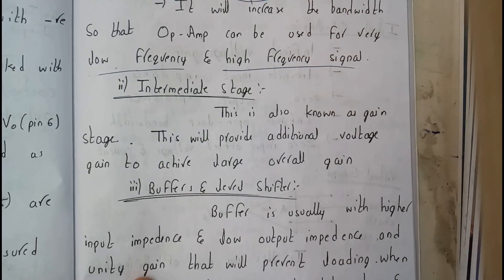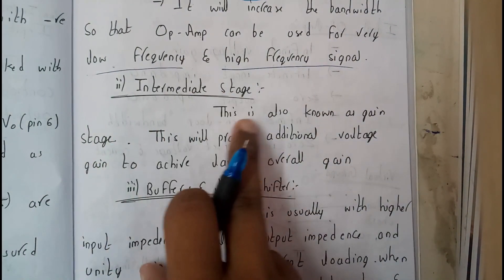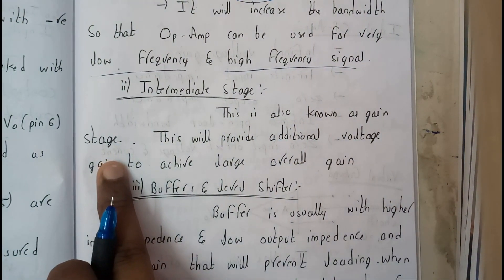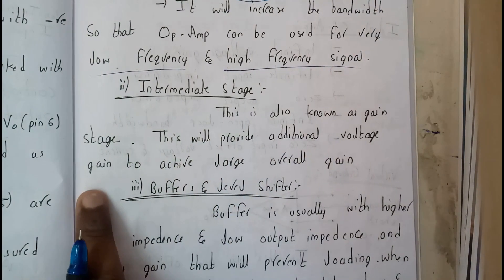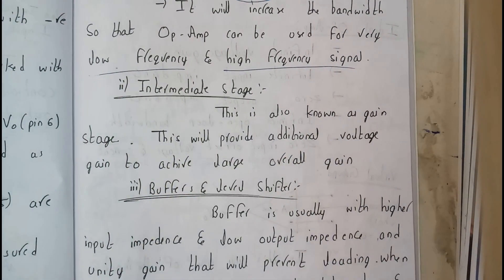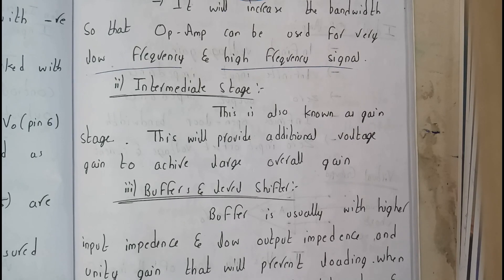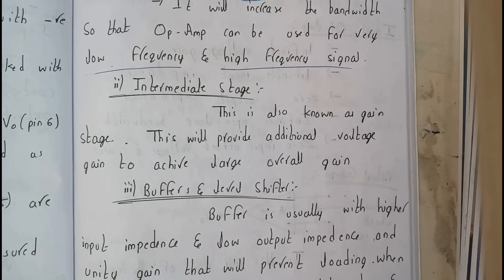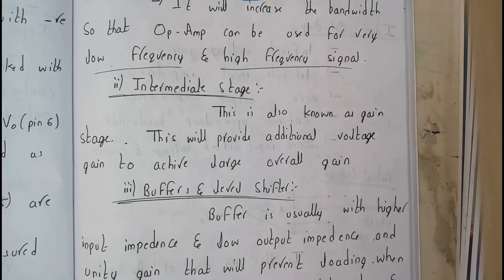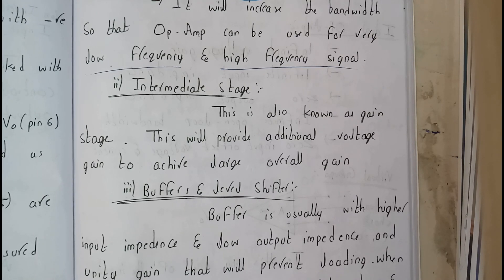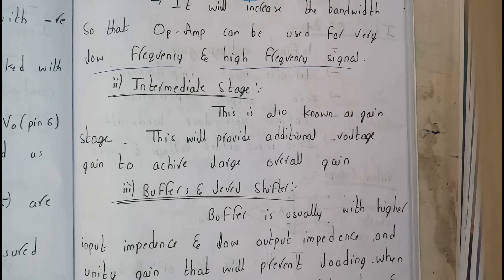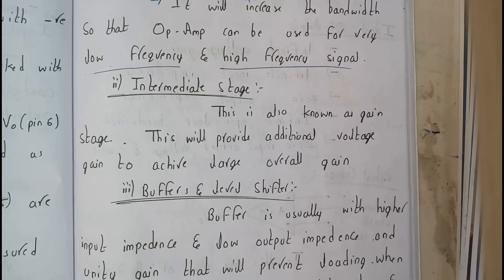So now further moving on to the intermediate stage guys. In the second stage, it is also known as gain stage. This will provide the additional voltage gain to achieve large overall gain. For this intermediate stage is only for attaining of large voltage gain guys, it's going to provide a large voltage gain to the output of the input stage.